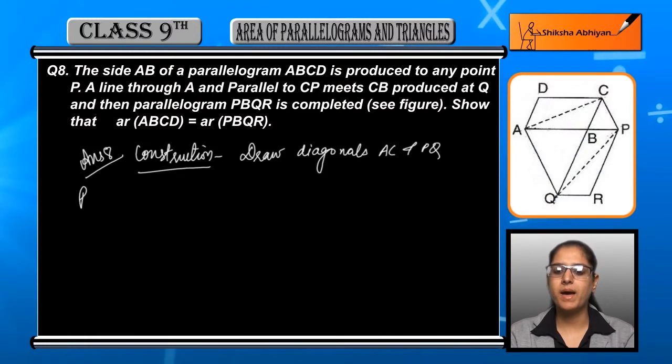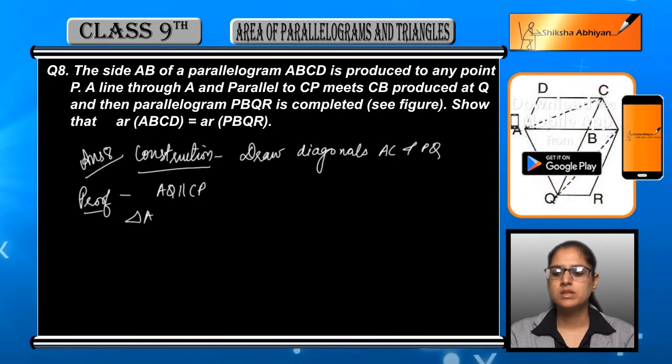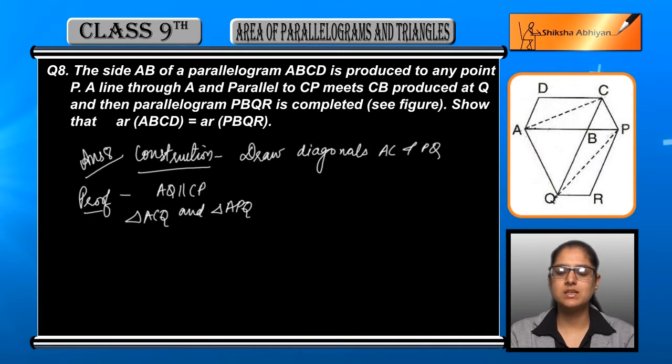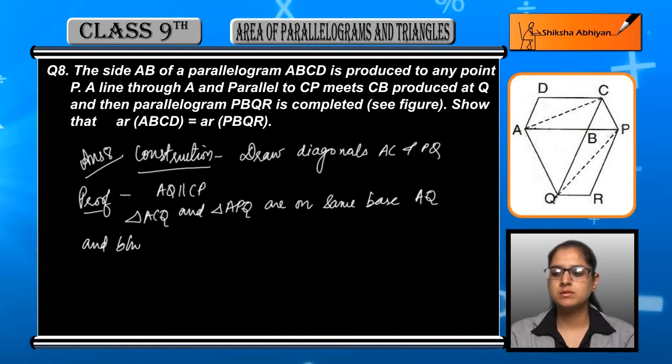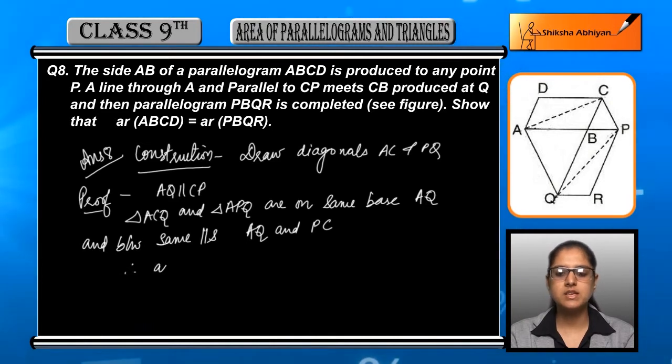Since AQ and CP are parallel to each other, triangles ACQ and APQ lie on the same base AQ and between the same set of parallel lines AQ and PC. This is why ar(ACQ) = ar(APQ).